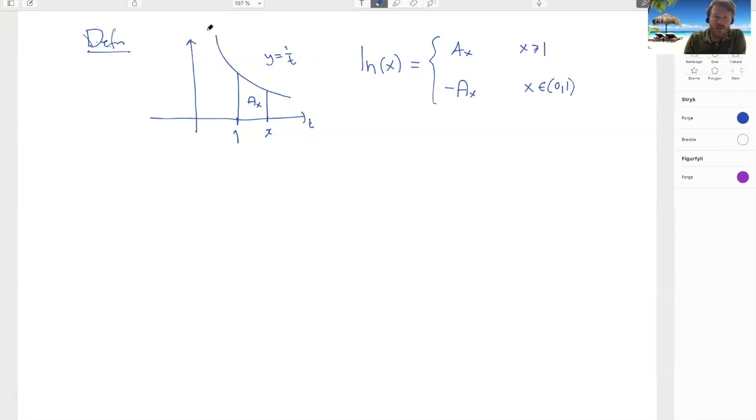So notice that this graph goes to infinity as we get to 0 here towards the origin. So we never actually define what this area is if x is 0 or if x is negative. We stay away from that so we're always a little bit to the right of the x.